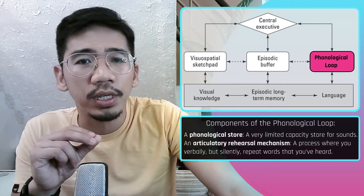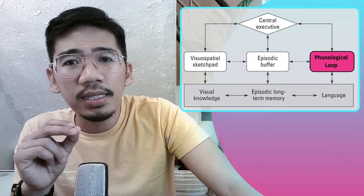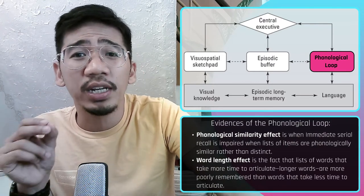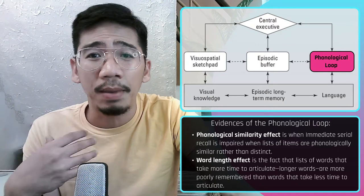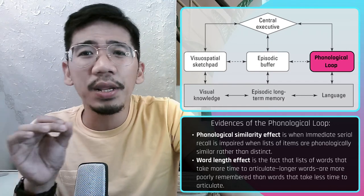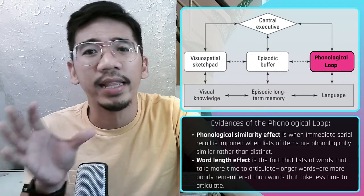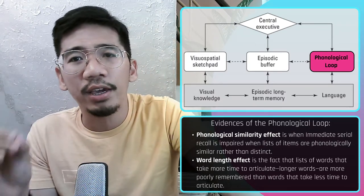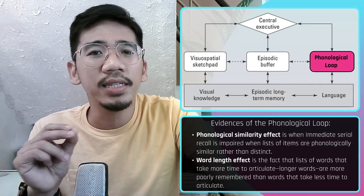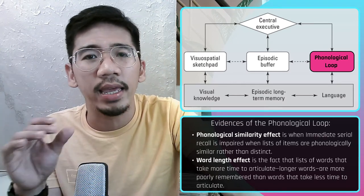There are two main sources of evidence for the phonological loop. The first is the phonological similarity effect: participants remember lists of words that sound the same — for example, man, cat, cap, map, can — far less accurately than lists of words that sound differently — for example, pit, day, cow, pen, suck. This effect occurs whether the words are presented visually or verbally, suggesting that words must be sub-vocalized or repeated silently in your head to gain access to memory.